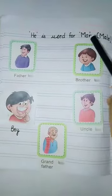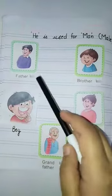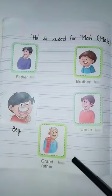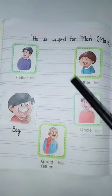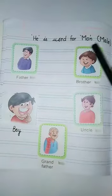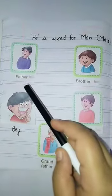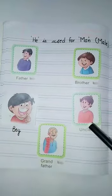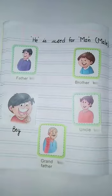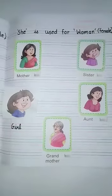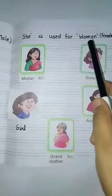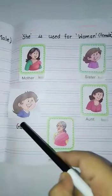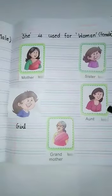'He' is used for a man. Like father, brother, boy, grandfather, uncle. 'He' is used for male. Male could be father, brother, boy, grandfather, or uncle. Now, use of 'she' — 'she' is used for a woman, like mother, sister, girl, grandmother, or aunt.